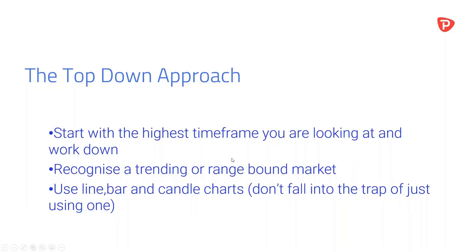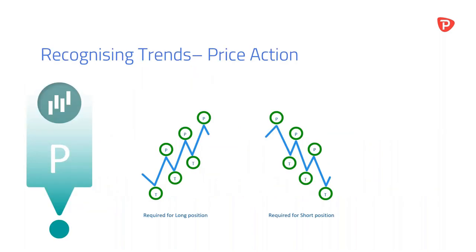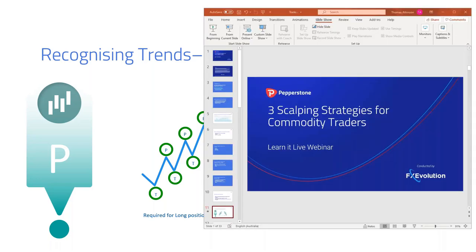We always talk about the top-down approach: understanding what's happening on the weekly and daily into the four-hour. You must know this to understand the trend — when we know the trend, it can be our friend on the smaller timeframes too. We're going to use lines, bars, candle charts, and recognize patterns. The first system we'll discuss is how to identify a trend and take advantage of it as a scalper.